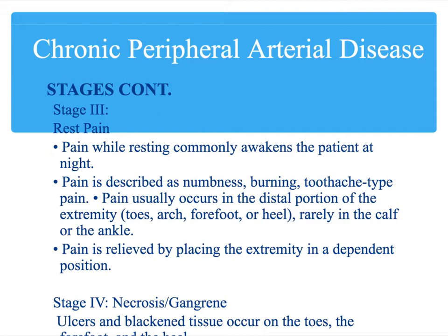Stage 4 of chronic peripheral arterial disease is when the artery is very severely occluded with atherosclerosis. The patient begins to show signs of ischemia and necrotic damage — the area becomes darkened, cold, and painful. It can actually develop gangrene, which is an infection due to the lack of nutrients and blood flow to the area.